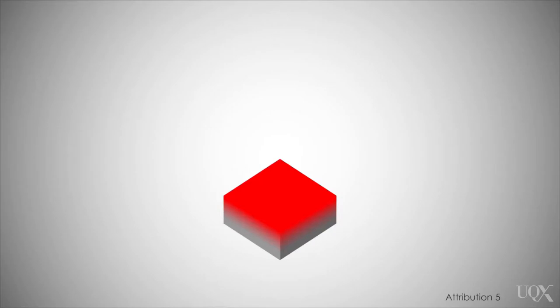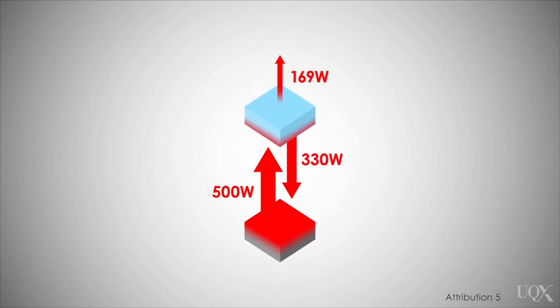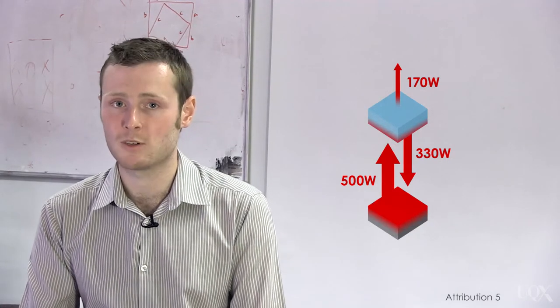A square meter of Earth's surface sends about 500 watts upwards, so it works like a 500 watt heater. The greenhouse effect sends down about 330 watts of heat. So in total, 170 watts goes from the warmer surface to the cooler sky. Heat overall goes from hot to cold, but the greenhouse effect sends some back to warm us up.